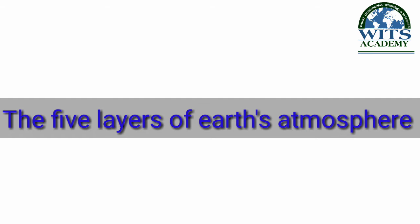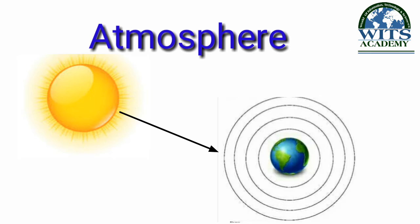Lekin un layers ko batane se pehle, main aapko atmosphere define kar dun — ki atmosphere kya hota hai? Atmosphere, jise hum air bhi kehte hain, jo hamari zameen ke itraf mein maujood gases ki layers hoti hain, jo zameen ko suraj ki khatarnak shuaon se mahfooz rakhti hain, jiske baghair zameen par zindagi namumkin hai. In atmosphere ki layers ne zameen ko charon itraf se ek ghilaf ki tarah apni agosh mein liya hua hai.